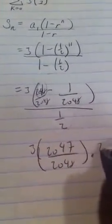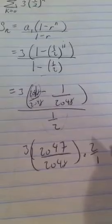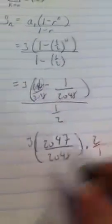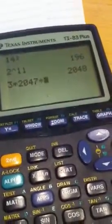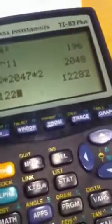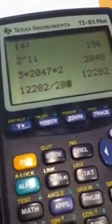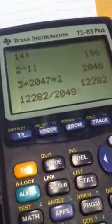And if I'm dividing by a half, that's the same as multiplying by the reciprocal 2 over 1. So this lovely mess is going to give you 3 times 2047 times 2 on the top, which is 12282, divided by 2048. And we get 12282 divided by 2048.